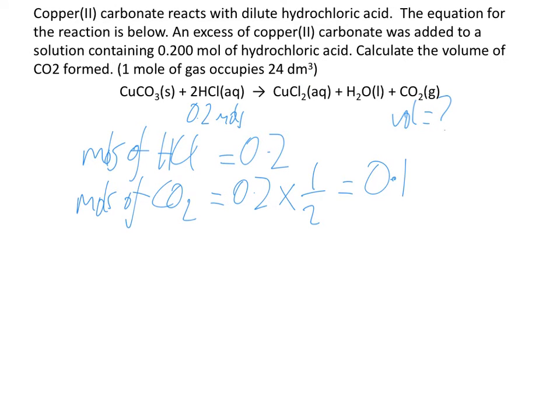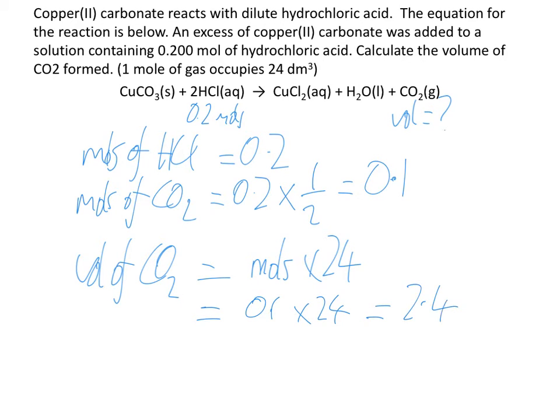We're told that 1 mole of gas occupies 24 dm³. We've got 0.1 moles of gas. So the volume of CO2 needed is moles times 24. I use this equation here because I'm dealing with a gas. So we've got 0.1 times by 24, and that comes out as 2.4 dm³. That probably is worth two marks in an exam. One mark for working out your moles of CO2, the second mark for working out your volume of CO2.